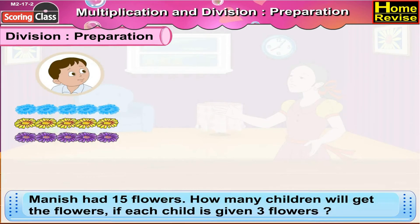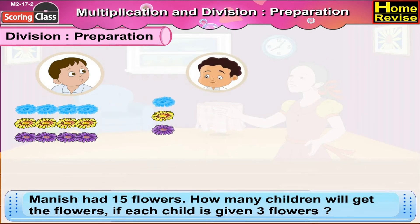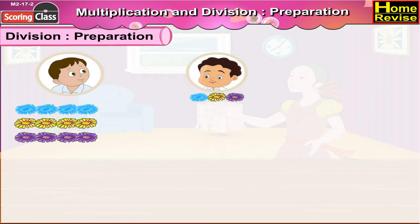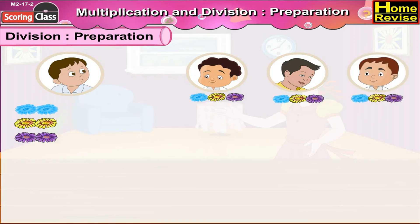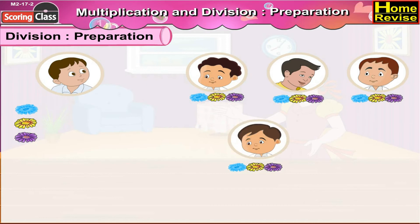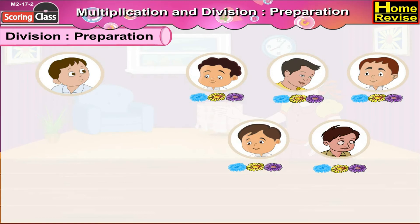Manish has fifteen flowers. How many children will get the flowers if each child is given three flowers? Now, Manish has fifteen flowers. He gives three flowers out of these to the first child, three flowers to the second child, three flowers to the third child, again three flowers to the fourth child, three flowers to the fifth child. Now, the flowers are finished. Manish has distributed all his fifteen flowers.